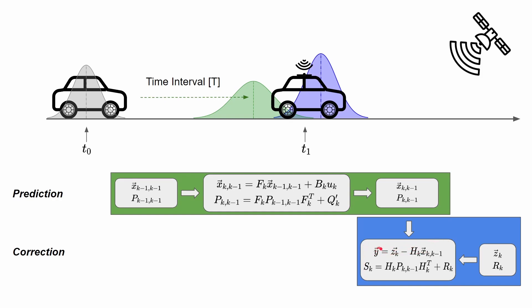In the Kalman Filter algorithm we calculate something called the residual, or in the literature it can also be called the innovation. The innovation is basically the error or deviation between the actual measurement z_k from the physical sensor, and the predicted measurement. The predicted measurement is the predicted state from the prediction step converted to the measurement dimension. So if we have velocity and position in the state, but we are measuring only position, we take only the position from the prediction step and compare it with the position measured from the physical sensor.